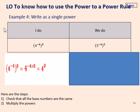Example 4: we've got a negative power inside the bracket and a 0 outside. It still looks different but it's the same process — we multiply the power inside the bracket by the power outside. Negative 4 times 0: anything times 0 gives an answer of 0, so our answer is 4 to the power of 0. Pause the video, copy that down, and try the we-do — we'll go through the answer in a moment.